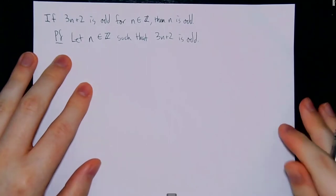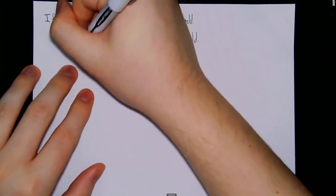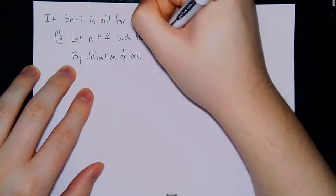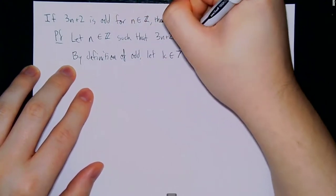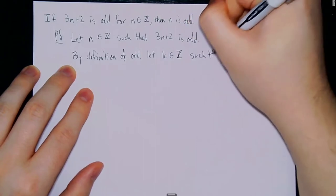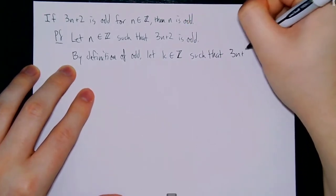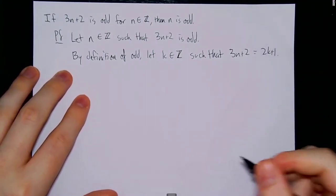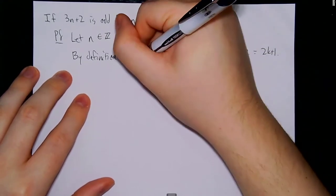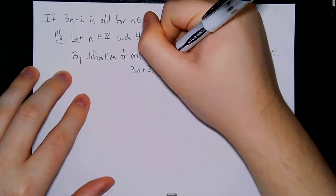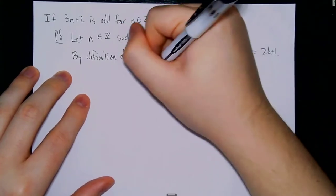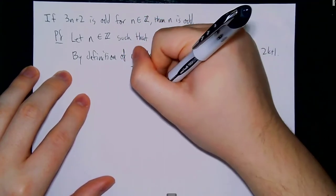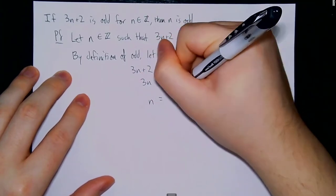We can immediately apply our definition of odd here. By definition of odd, let k be some integer such that 3n plus 2 equals 2k plus 1. So now we can do the algebra. 3n plus 2 equals 2k plus 1, which means subtracting 2 from both sides, we have 3n equals 2k minus 1. So then n equals 2k minus 1 divided by 3.